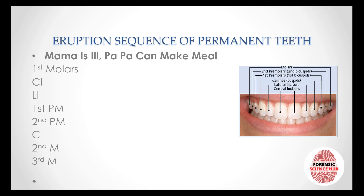Now let's talk about the eruption sequence of permanent teeth. You can remember this one line: 'Mama is ill, Papa can make meal.' The first alphabets give you M I I P P C M M — and everything is sorted. This is the eruption sequence of permanent teeth: first the first molars come, then central incisors, then lateral incisors, then first premolar, second premolar, then the canine, then the second molar, and then the third molar.